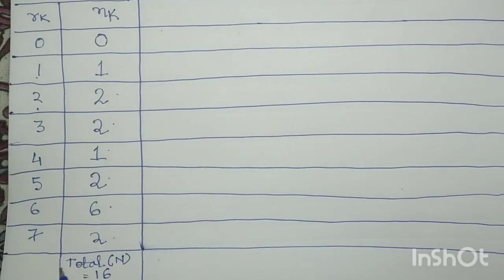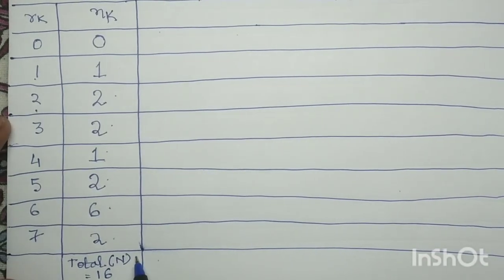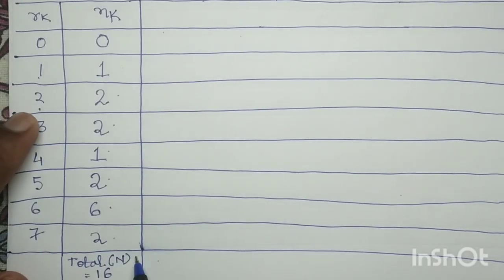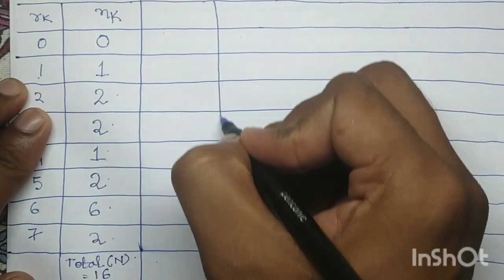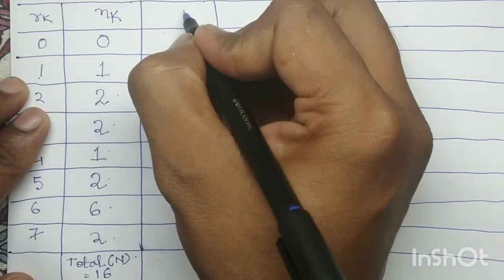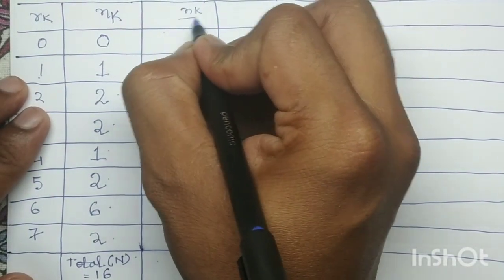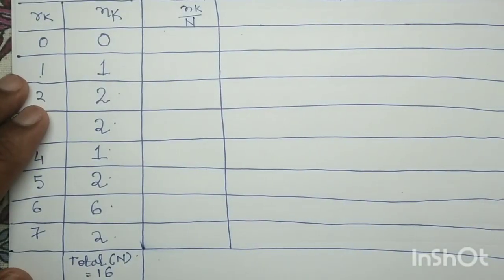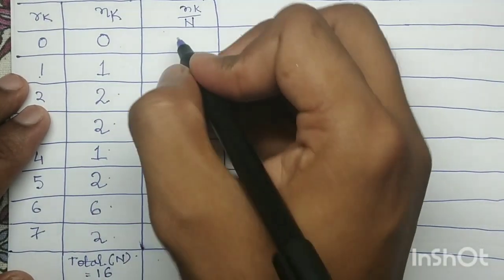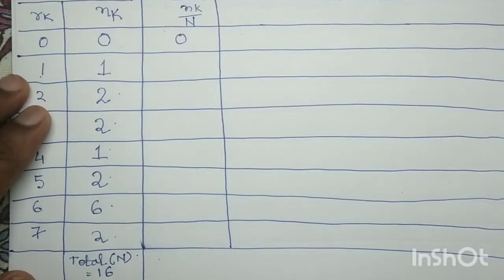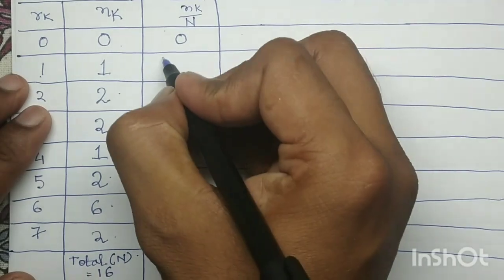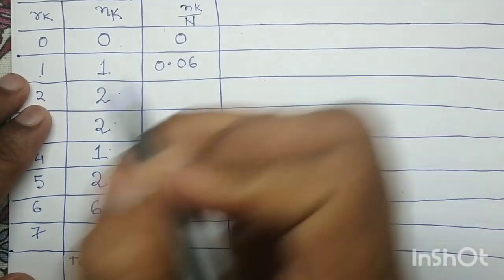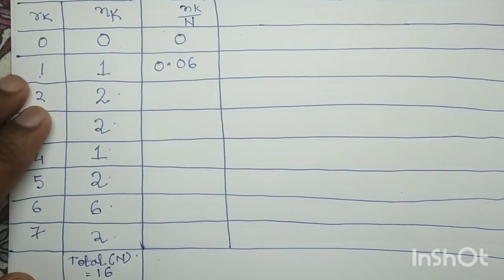After writing RK and NK, next you perform normalization to determine the probability density function. In the next column, compute NK divided by N. So 0 divided by 16 is 0; 1 divided by 16 is 0.0625, which rounds to 0.06; 2 divided by 16 is 0.125, which rounds to 0.13.